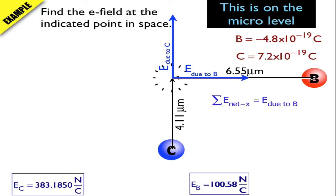Now, what I'm doing here is I'm doing the same thing I did with free-body diagrams. I'm summing up the electric fields in the X direction. In this case, there's only one, and it's due to B. And I'm going to sum up the electric fields in the Y direction. In this case, there's only one, and it's due to C.